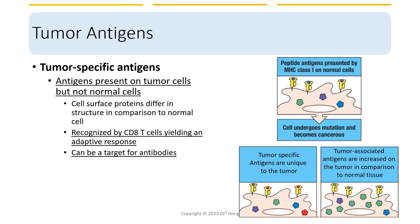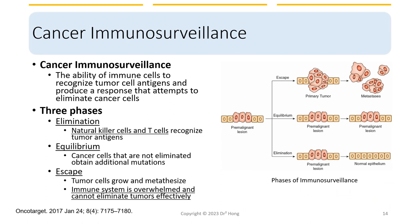Cancer immunosurveillance refers to the ability of immune cells to recognize tumor cell antigens and produce a response that attempts to eliminate cancer cells. The process is broken down into three phases. The first phase is elimination, when natural killer cells and T cells recognize tumor antigens. If successful, it restores normal tissue. In the equilibrium phase, cancer cells that are not eliminated enter a stationary phase and can acquire more mutations. When escape happens, tumor growth resumes and can spread to distant sites, at which point the immune system has been overwhelmed and cannot eliminate the tumors effectively.